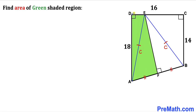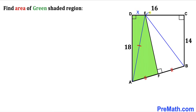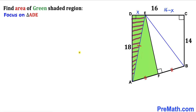Next, let me label segment DE as x units. We know the whole side length CD is 16, so segment EC is going to be 16 minus x.